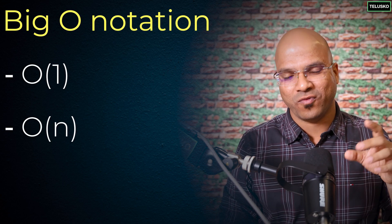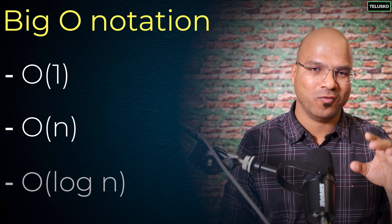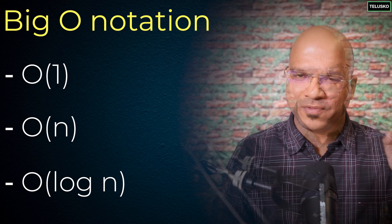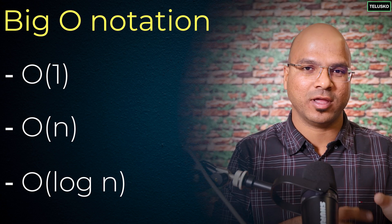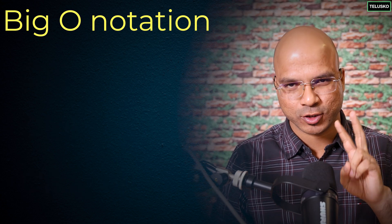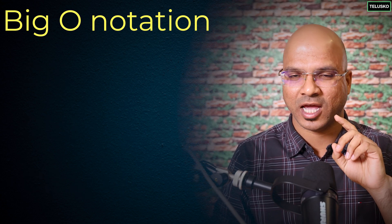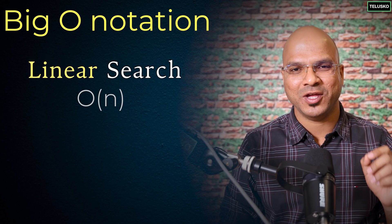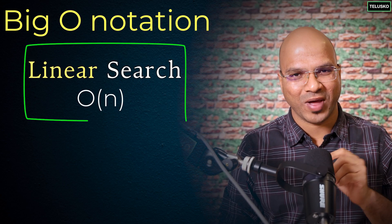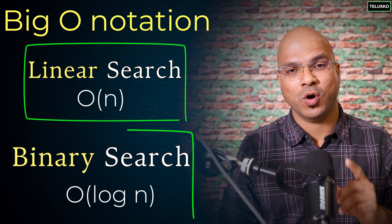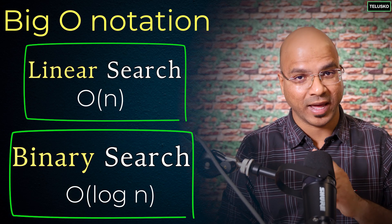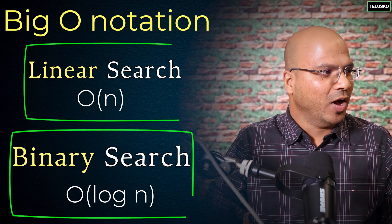We have discussed Big O notation — Big O of one, Big O of n, Big O of log n — but at this point let's focus only on two algorithms: linear search, which is Big O of n, and binary search, which is Big O of log n.